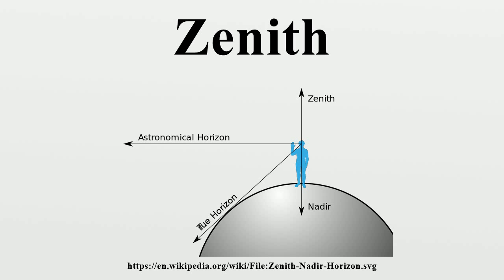Possibly through Old Spanish, it was reduced to 's-a-m-t' and miswritten as 'c-n-e-t.' Zenith emerged as the 'm' was misread as 'ni,' and through Old French, 'zenith' first appeared in the 17th century.